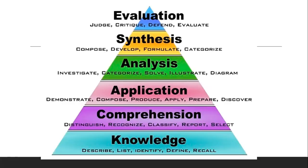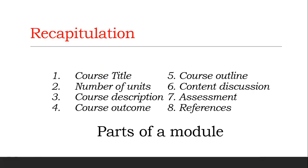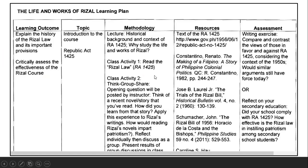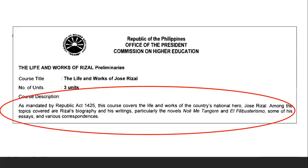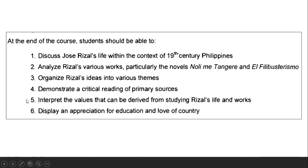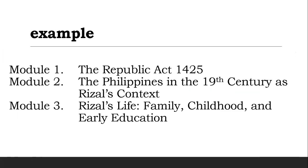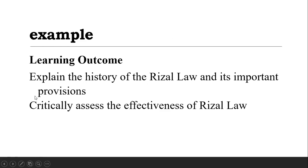For a recap, the parts of a module are: course title, number of units, course description, course outcome, course outline, content discussion, assessment, and lastly, references. All of these should be based on what CHED has provided — we are formatted under CHED. The module is still based on what CHED gave us, so during CHED audit or monitoring, we won't have problems. But in the end, we can still make changes as long as we can justify why we made them.